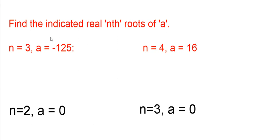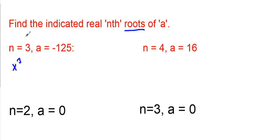In our next questions on dealing with rational roots, we're asked to find the indicated real nth roots of A. The roots we're referring to are what values that we can take the nth power of to get A. So essentially, we're going to use a variable x, where x to the nth power has to equal A. That's what we're looking for: x to the nth power equals A.